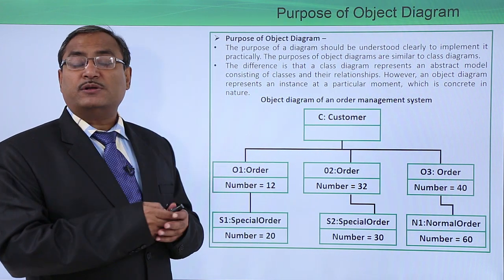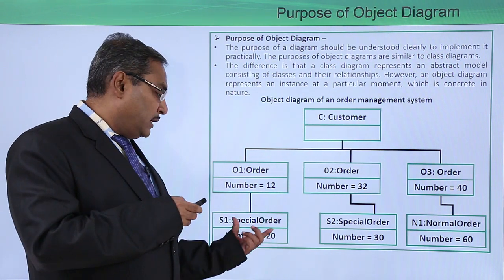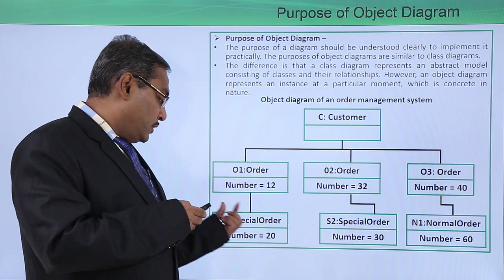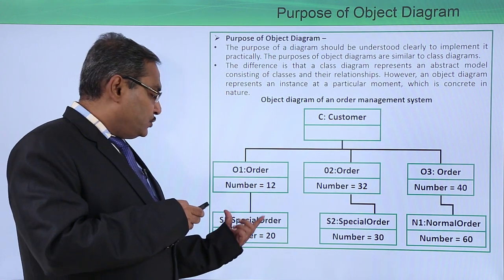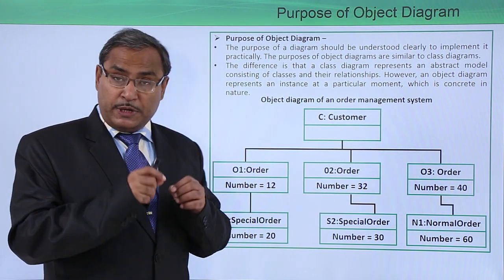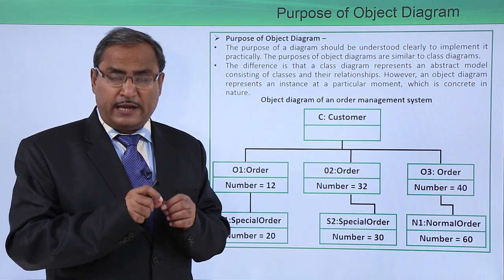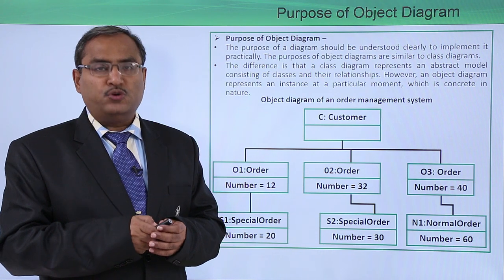For this number, four bytes of memory space will be reserved because it is the instantiation of the class. The class name is SpecialOrder and the object name is S1. Number is the respective property or attribute which is defined and it is holding the value 20.